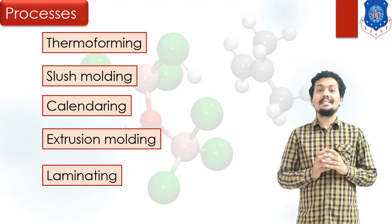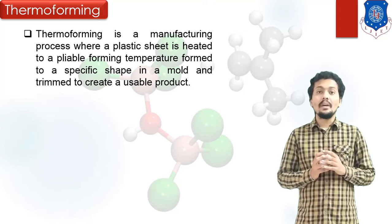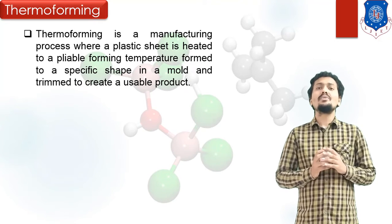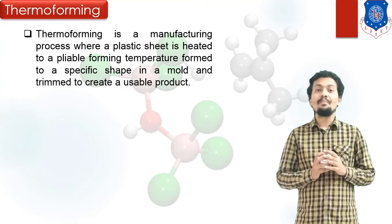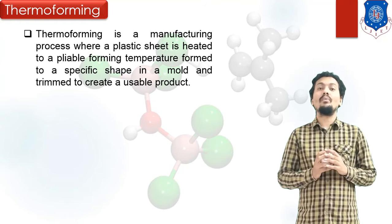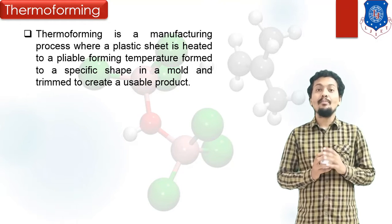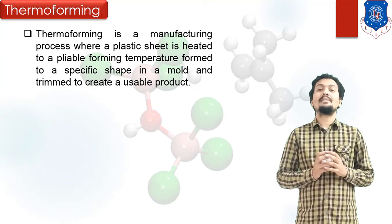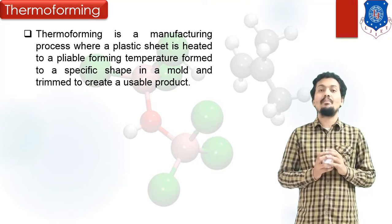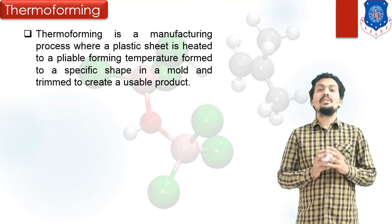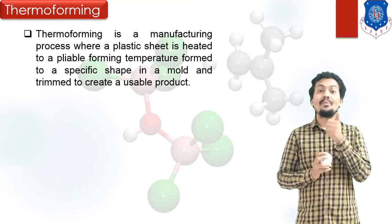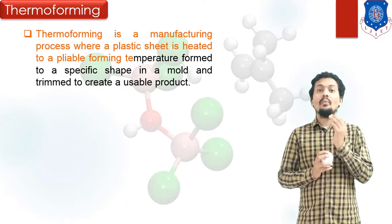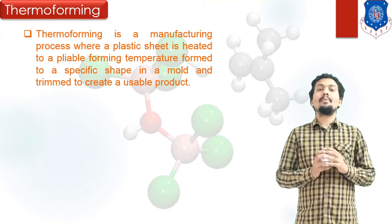The first process is Thermoforming. In Thermoforming, with the help of vacuum and pressure difference, we can reshape our plastic material or give shape to it over some geometry. This is the very important concept of Thermoforming — using vacuum and pressure difference to reshape plastic material.